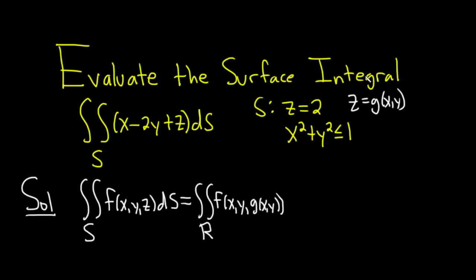Okay, that's the equation for your surface. So in this case it's going to be 2. g is the same thing as z. Then here we have a square root, and it's 1 plus the partial derivative of g with respect to x squared, plus the partial derivative of g with respect to y squared, and then we have dA.